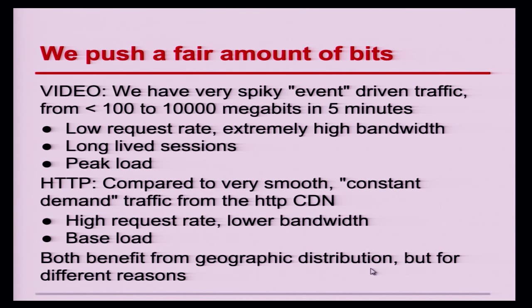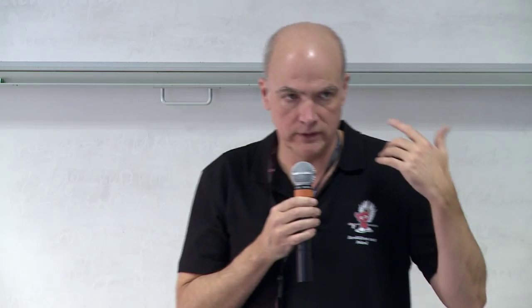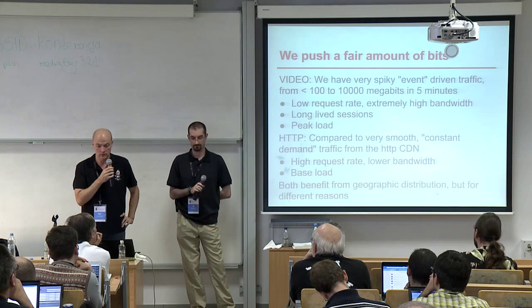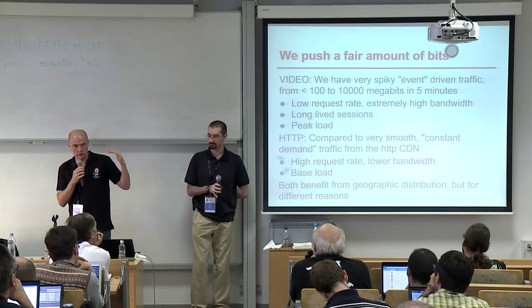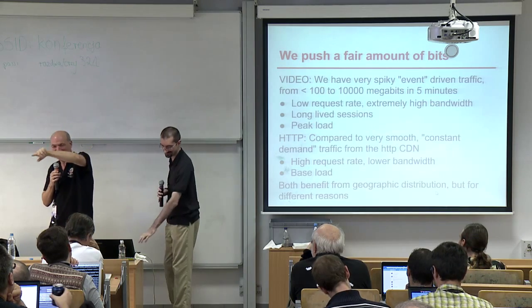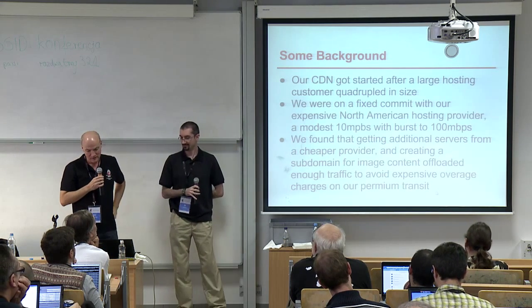In terms of video, we have very spiky event-driven traffic where in a space of five minutes things can go from 100 megabits to 10 gigabits. Video is a low request rate situation with extremely high bandwidth — sometimes one to one-and-a-half megabits to each client — and the sessions are long-lived. In comparison, HTTP is smooth — it tends to follow when people are awake. Our largest CDN HTTP client runs on lots of news sites, and people read the news at lunchtime at work, so the graph goes up when they're at work.